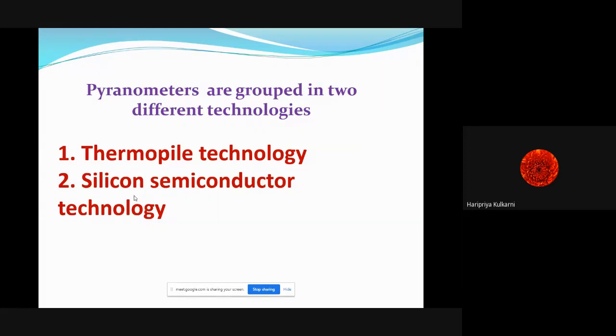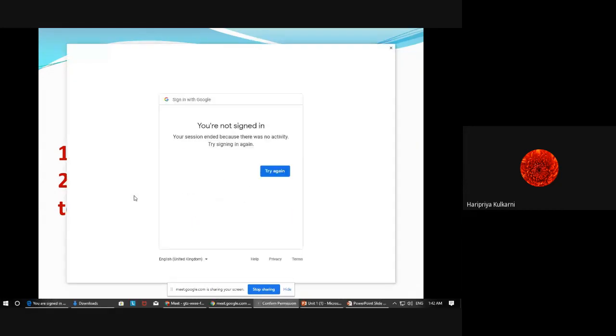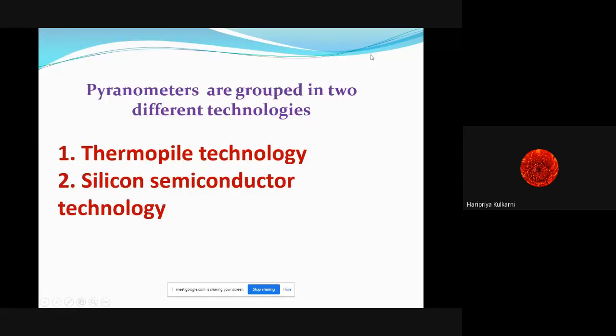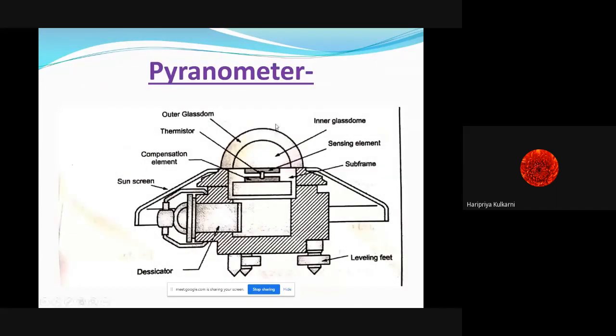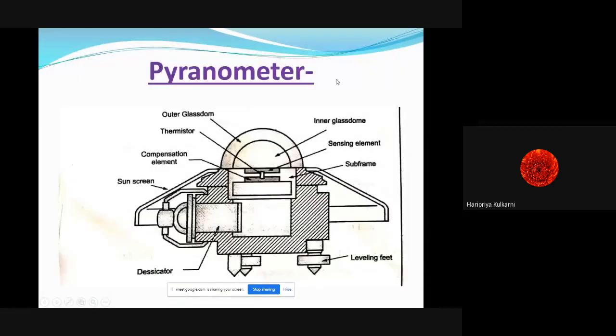We'll go into details of total solar radiation measurement one by one. This is a pyranometer and its construction. There is an outer glass dome and an inner glass dome. These two glass surfaces allow solar radiations to enter inside.